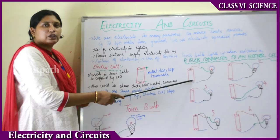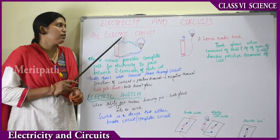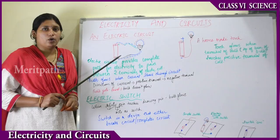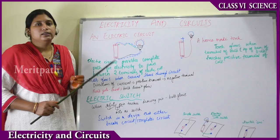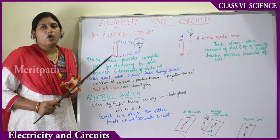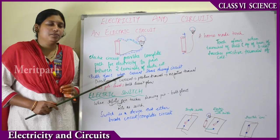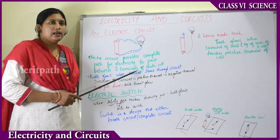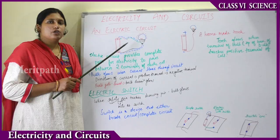This is how a bulb is connected to an electric cell — when the circuit completes, there is a flow of electricity and the bulb glows. An electric circuit has a battery with positive and negative terminals, pieces of wire with plastic covering and metal inside, and a bulb. An electric circuit provides a complete path for the electricity to pass between the two terminals of the electric cell.